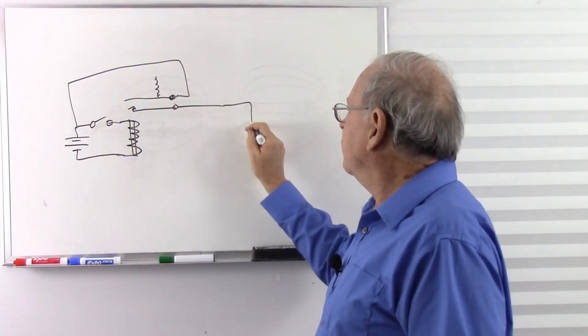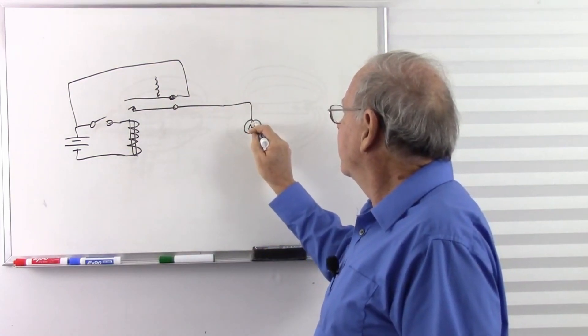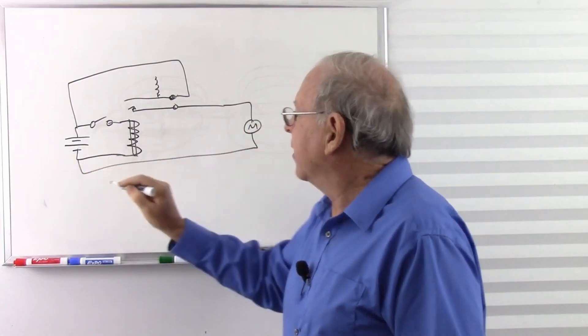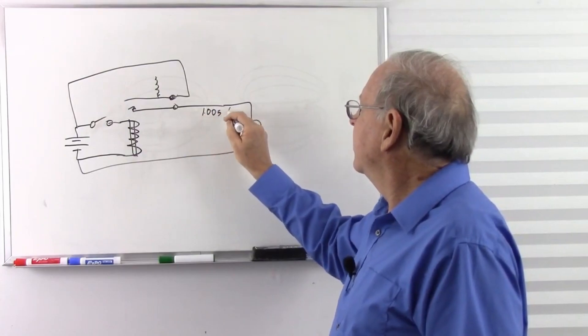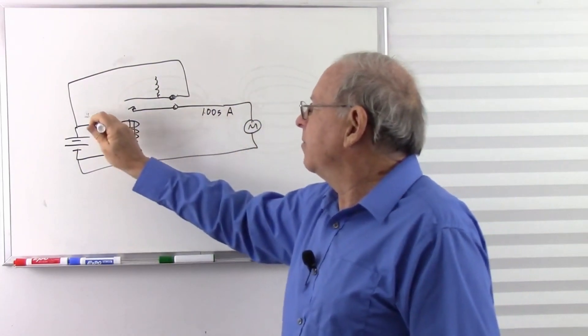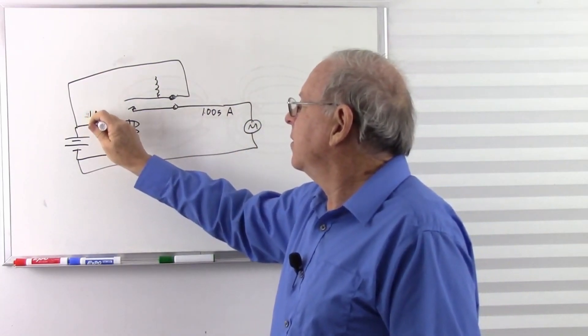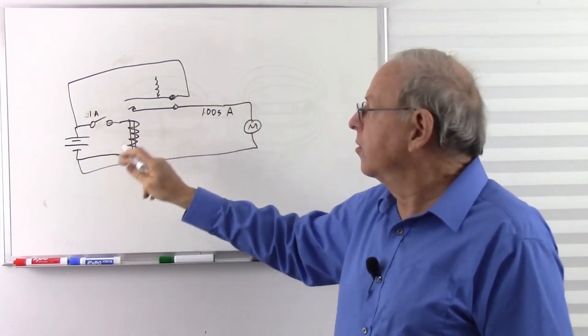And this would go to your starter motor and back to your battery. So we have hundreds of amps here and just maybe an amp or so over here to operate the solenoid.